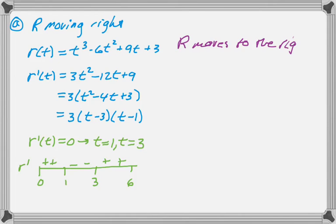So R moves to the right on the interval 0 to 1, and on the interval 3 to 6. And I'm including 0 because the velocity is definitely positive there. And I'm including 6 because it's definitely positive there. Velocity is 0 at 1 and 3, so I'm not including those.